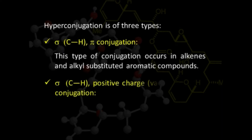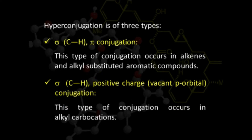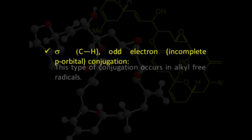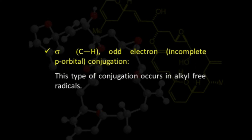The next type of hyperconjugation is shown by molecules having a sigma bond and a positive charge, where this positive charge is present on a vacant p orbital. This conjugation occurs in the case of alkyl carbocations. Free radicals also show hyperconjugation because they have a sigma carbon-hydrogen bond and an odd electron present in an incompletely filled p orbital. If these two are present in conjugated positions, the free radical is capable of showing hyperconjugation.